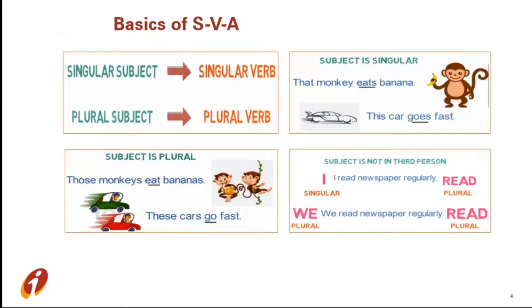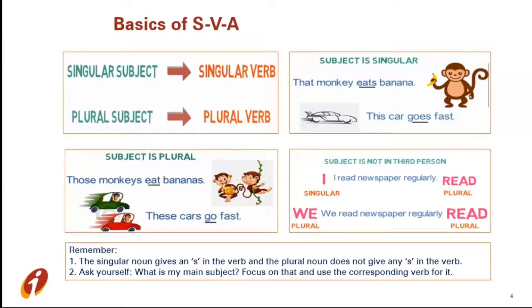As we know, a sentence consists of three parts: the subject, the verb, and the object. In this session we will understand that the coordination between subject and verb has to be properly maintained for a perfect sentence or for a perfect conversation. We will also practice a few examples for better understanding.